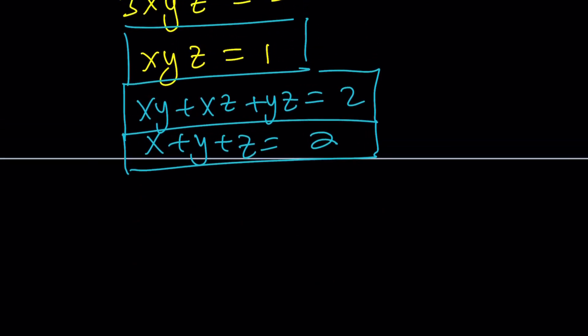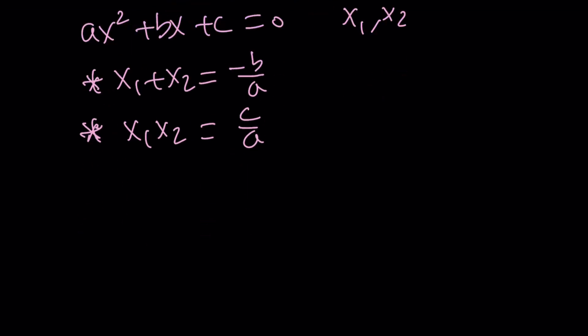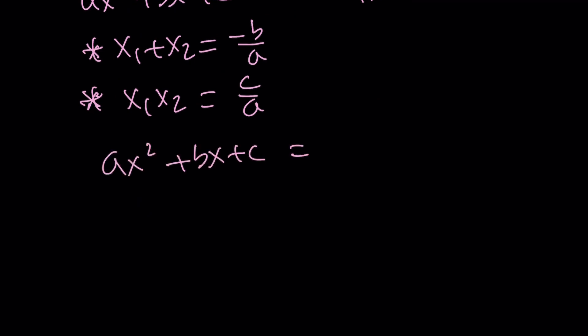So Vieta's formulas basically gives us the relationships between the sum, the product of the roots, and the coefficients of a polynomial equation. For example, if you have ax² + bx + c = 0, which is the quadratic equation, and the roots are x₁ and x₂, then we do know from Vieta's formulas that x₁ + x₂ is -b/a, and x₁x₂ is c/a. How do you prove this, right? Well, easy. You can just set this equal to a(x - x₁)(x - x₂), and then equate the coefficients, so on and so forth, you'll get the same result. But there's something nice about this, is that you can work backwards. So if you know the roots, you can write the equation.